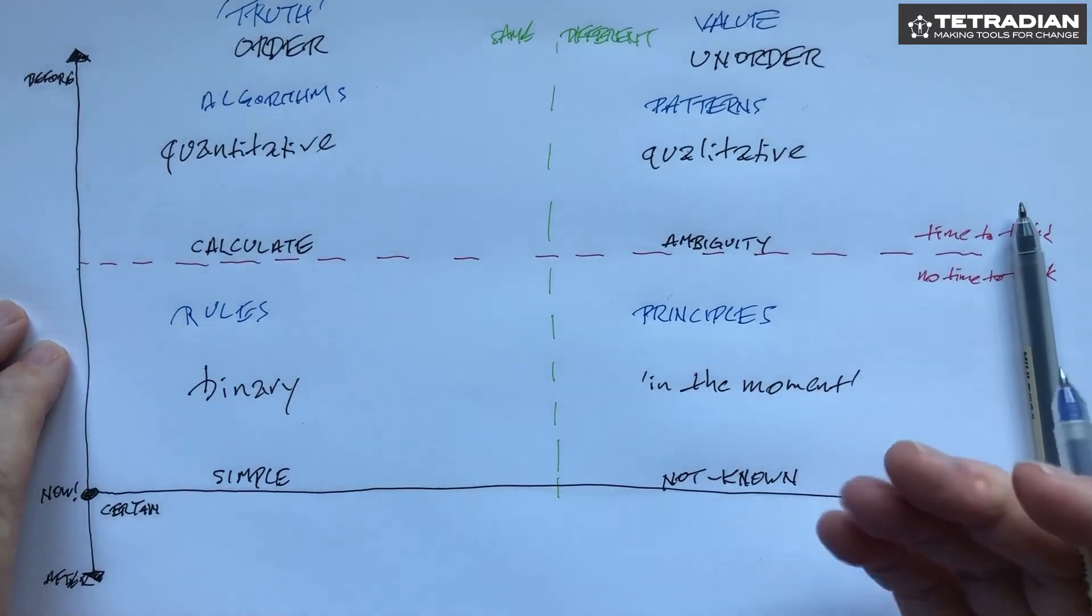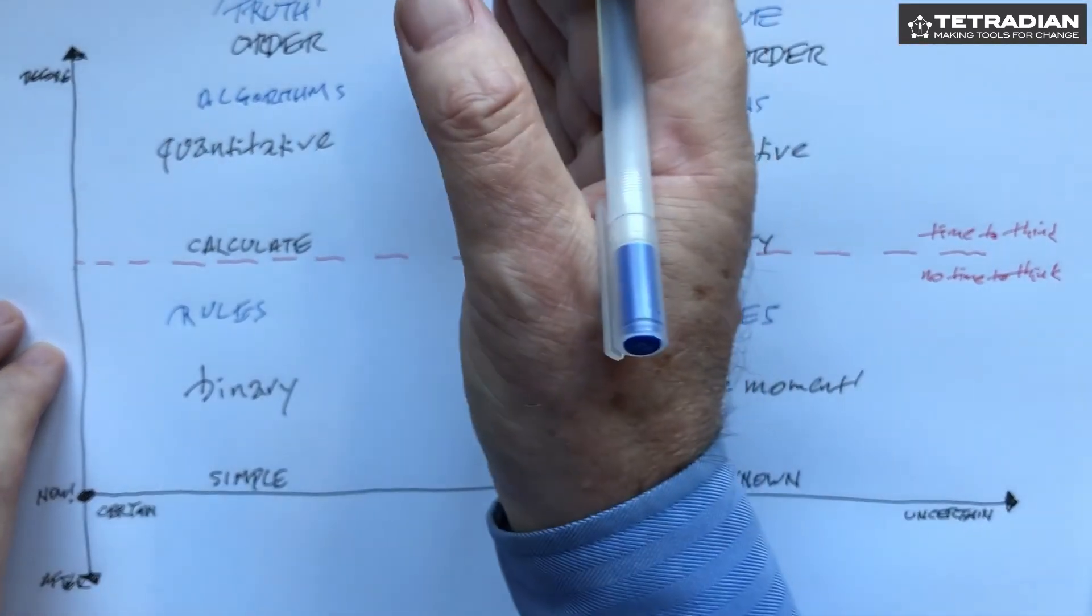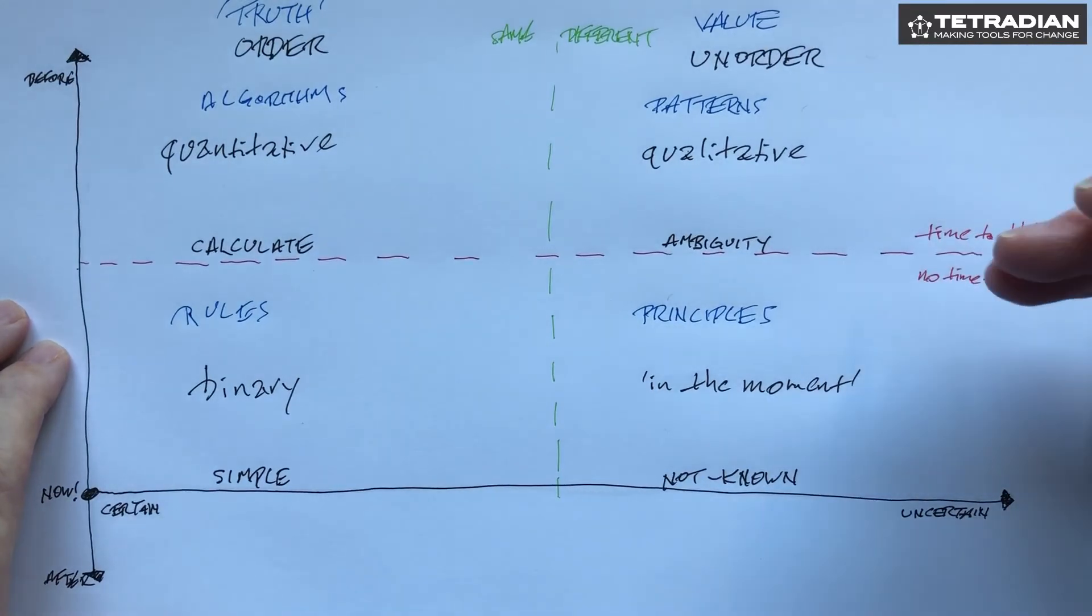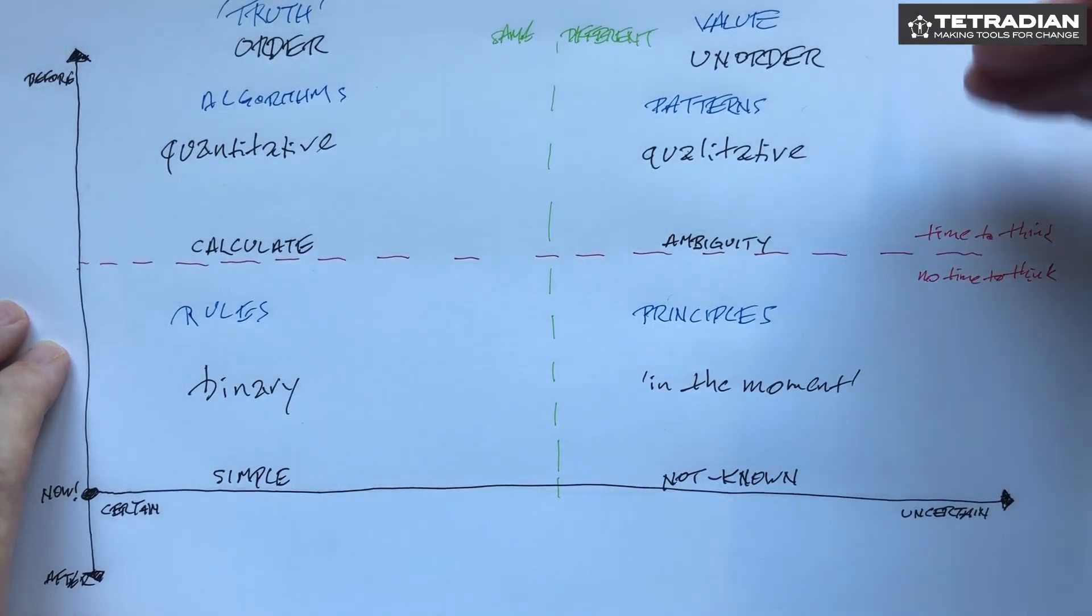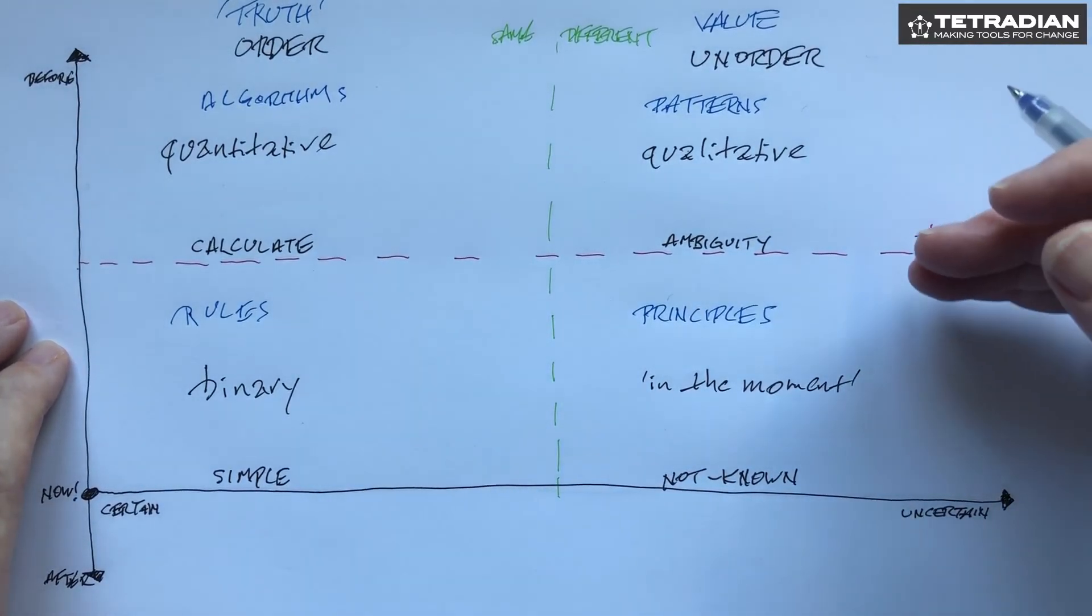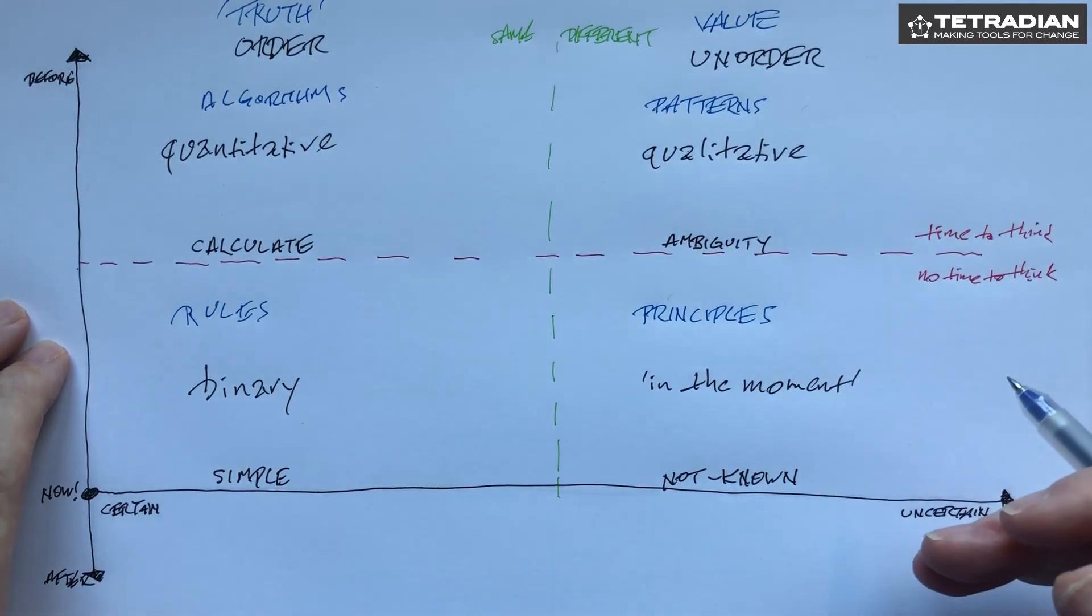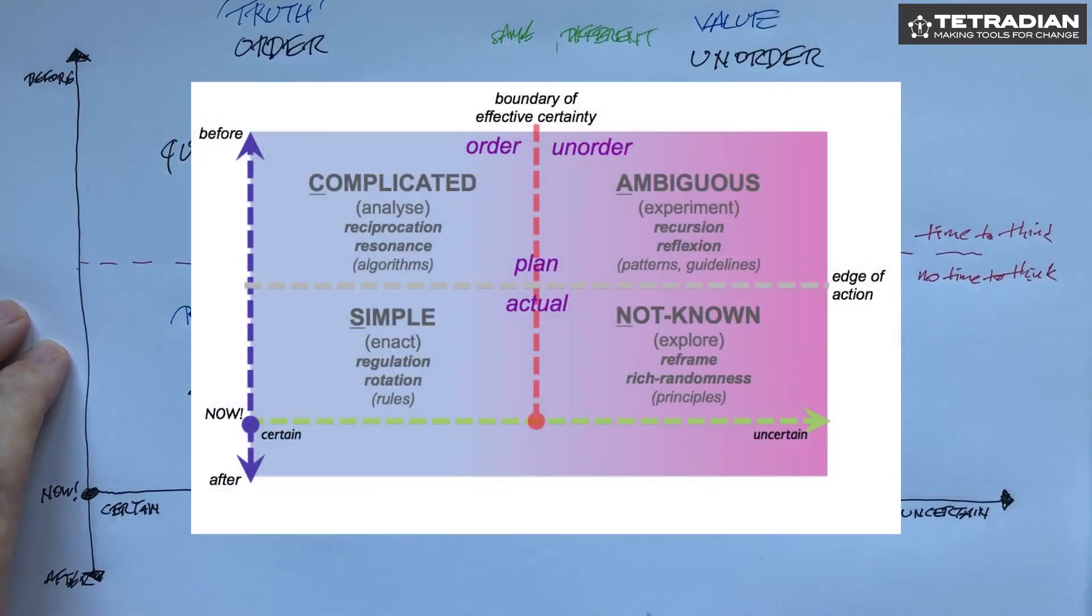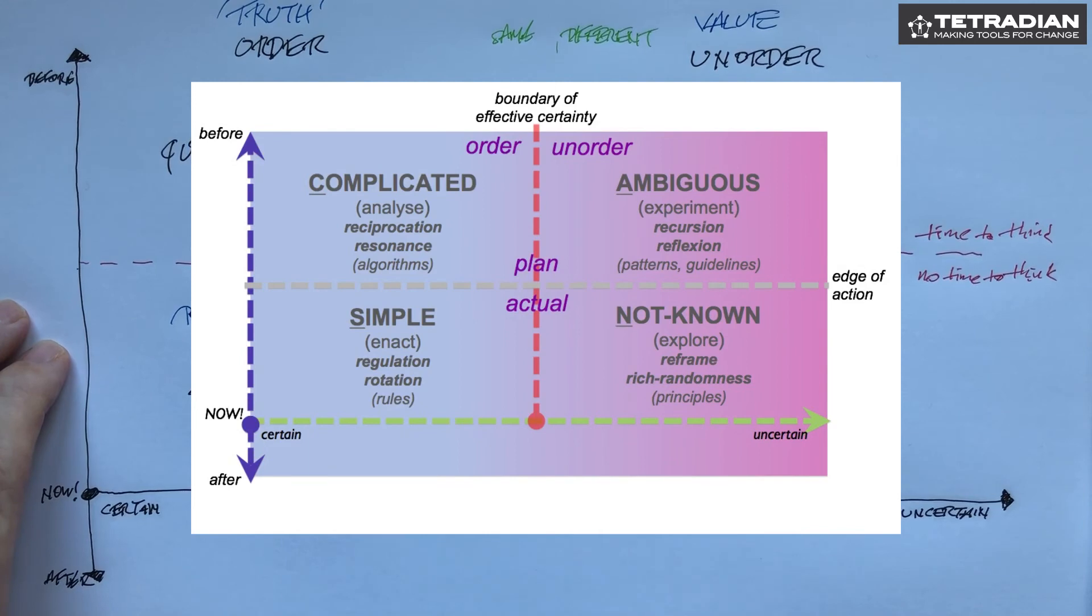So we can use this kind of frame to help us identify what types of decisions we need and what the support mechanisms we need for them in terms of whether they are dealing with the same or the different, and also in terms of whether we've got time to think and go back or whether we are committed to action. So there's a simple way to use the SCAN frame to help guide us in sorting out what types of decisions we need in any given context.